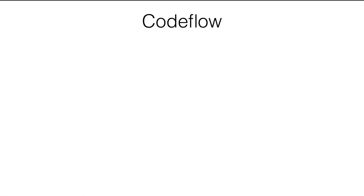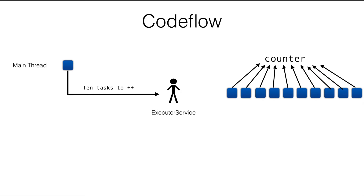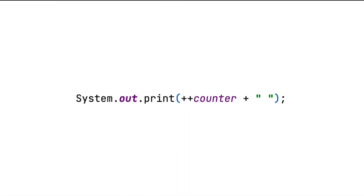Let's look into the code flow. When the program starts, we have a counter static variable, and in the main thread we create an executor service and submit 10 tasks to increment one number. Since the executor service is managing 10 different threads, each thread will increment the counter once. The counter increment expression looks simple, but in the background there are three different operations: the thread reads the counter, increments it, and writes the incremented value back. The fourth operation is to print the counter value.